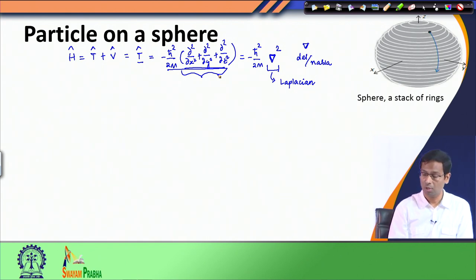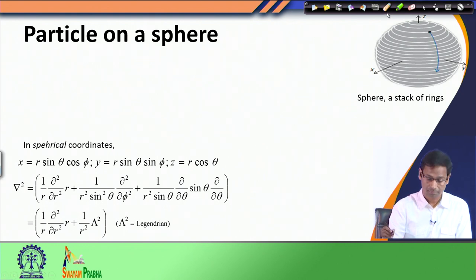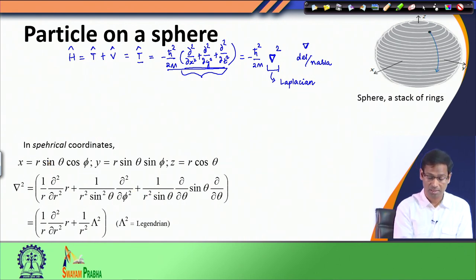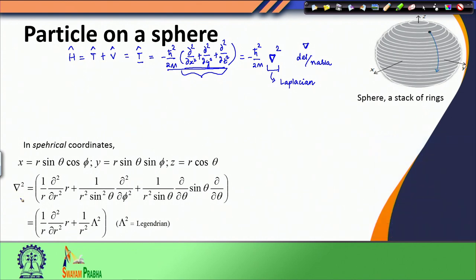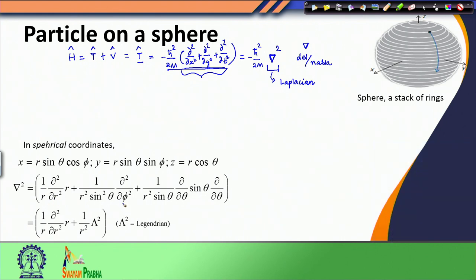We now recall how spherical coordinates are defined: x, y, z are expressed in terms of r, θ, and φ. When I rewrite the Laplacian in spherical coordinates, I obtain a long expression that contains second-derivative terms with respect to r, derivatives with respect to φ, and derivatives with respect to θ, so all three coordinates are present.